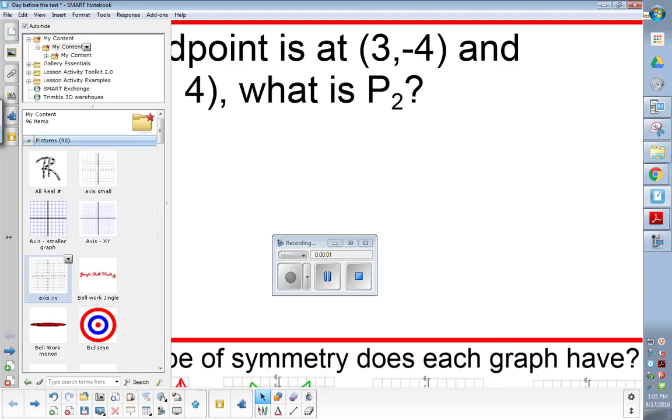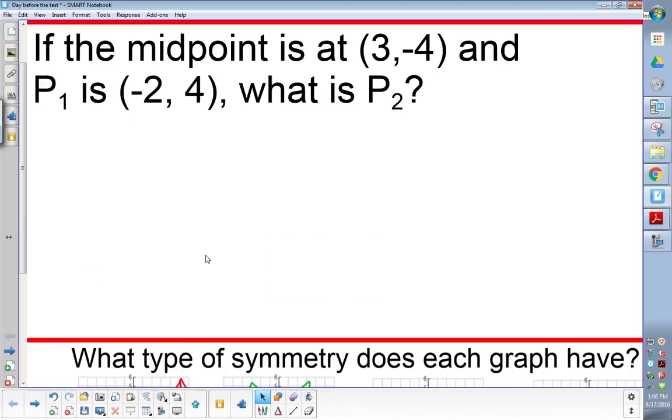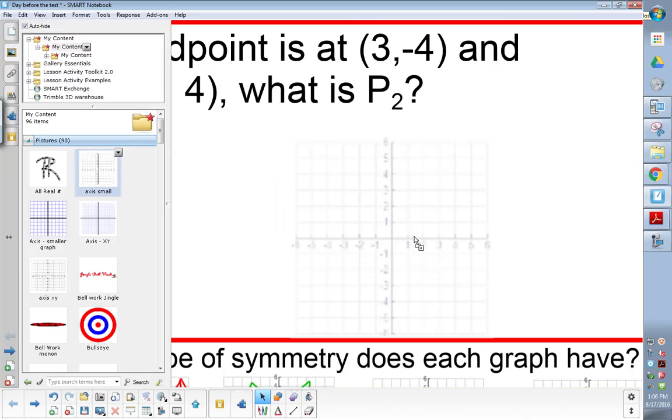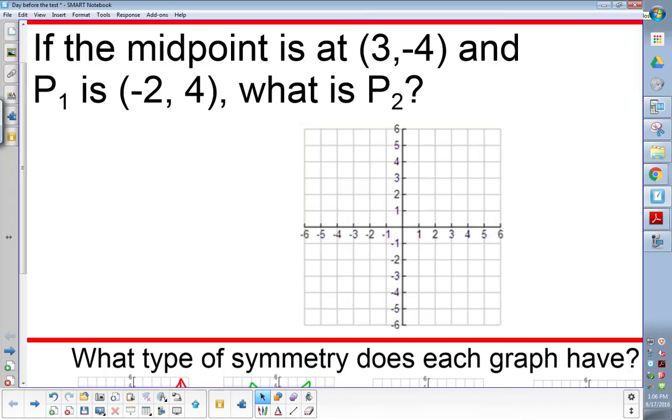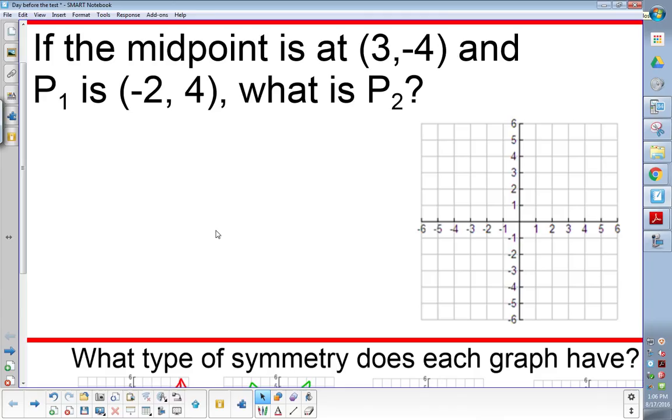For Bellwork here, this is a question that we struggle with a little bit. We want to make sure we understand that it's not as hard as it seems, and we're going to do a really easy way of solving it here in a second. It says, if the midpoint is at 3, negative 4, and the first point is at negative 2, 4, what is the second point at?